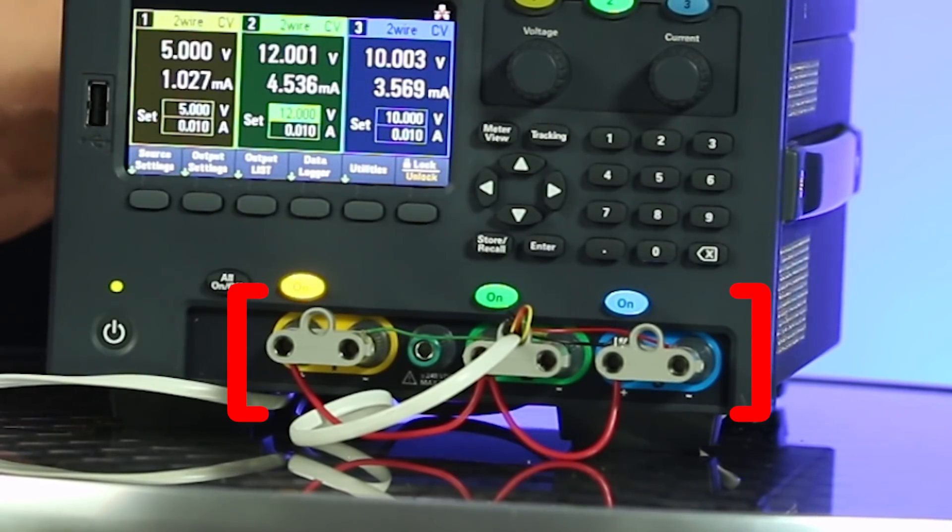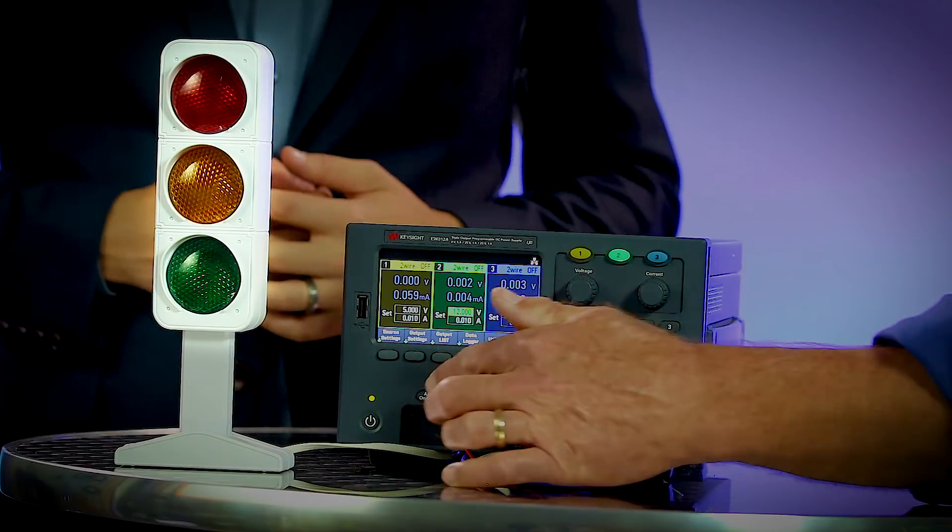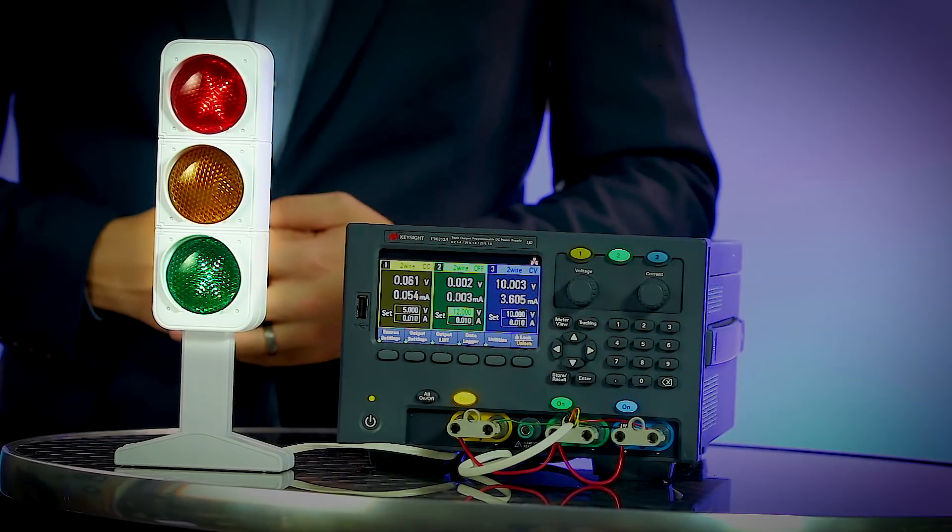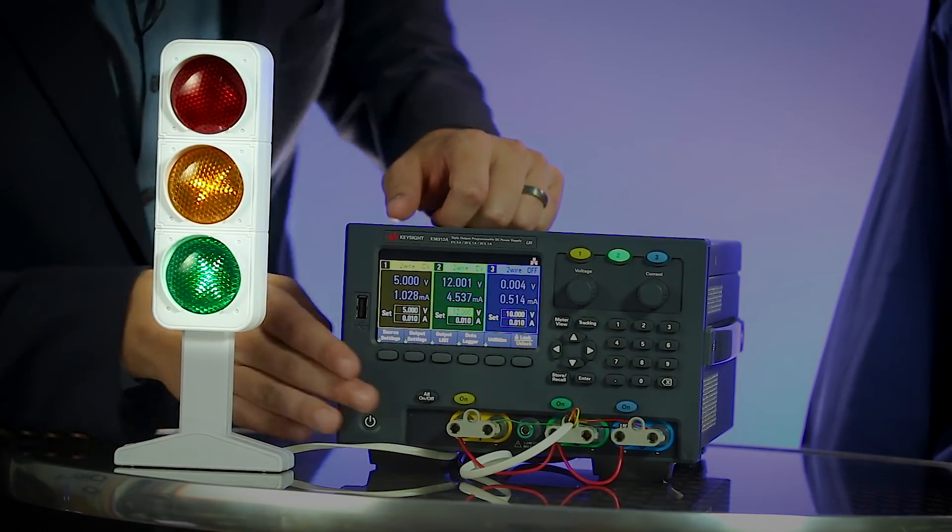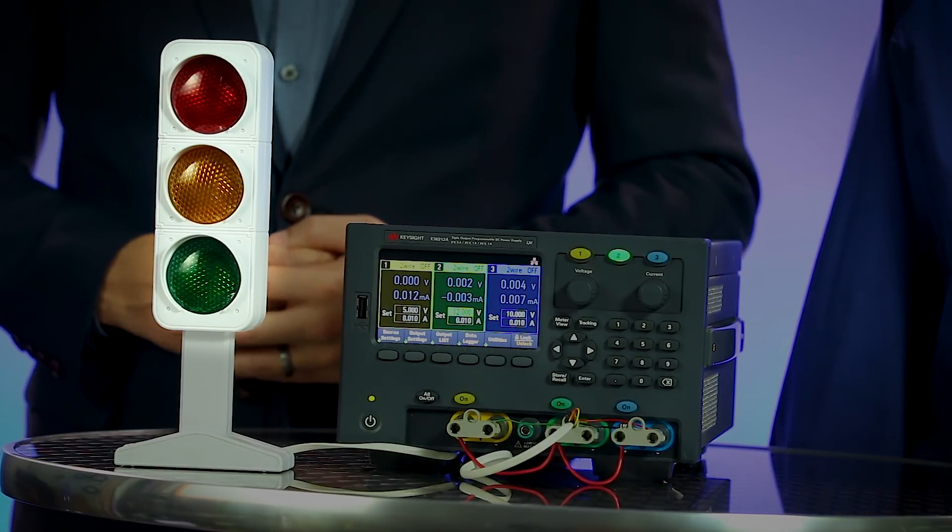Now that everything's set up, we're ready to connect to our lights and start our sequence. I'll press the on all button, and you can see the outputs turn on with their respective delays. Likewise, you can turn off the outputs and see the turn off delays. Some devices can be damaged if they're not powered down in the correct order.